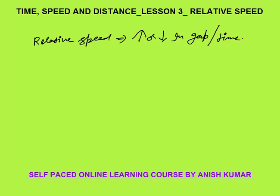Relative speed is a concept used when two objects are moving with respect to each other — either they are moving in the same direction or in opposite directions. Let's assume a simple case. Let's say this is point P and this is point Q. Car A is there, and Car B is there.